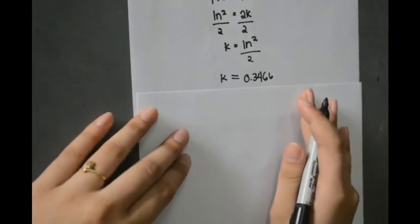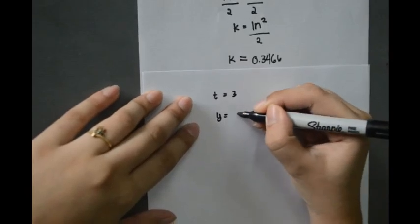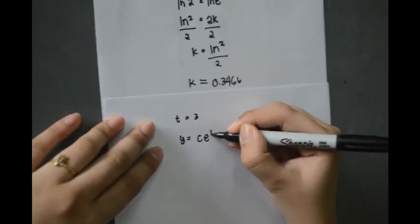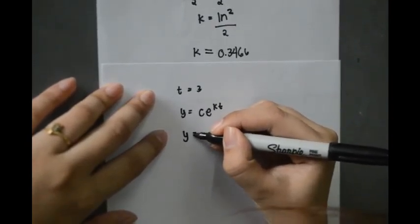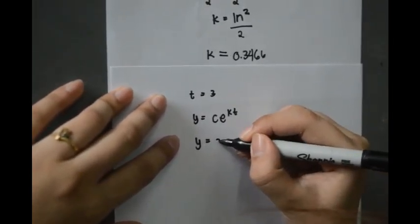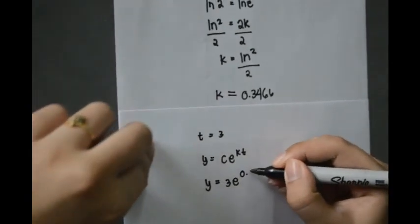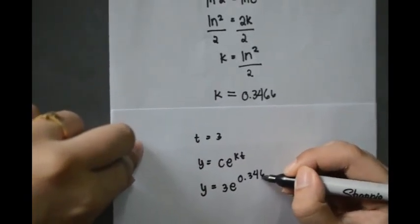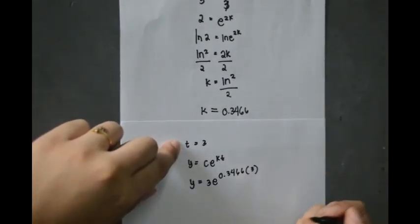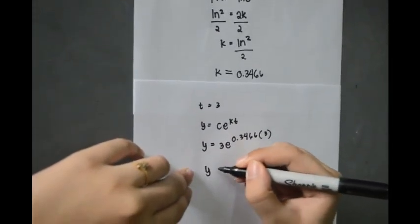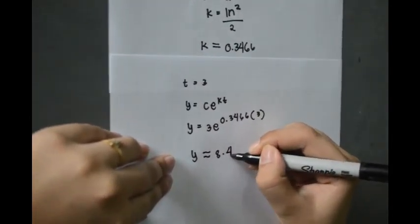To find y when t equals 3, we use the formula c times e raised to k times t. By direct substitution, c equals 3 and k equals 0.3466 times t equals 3. The final answer is y equals 8.485.